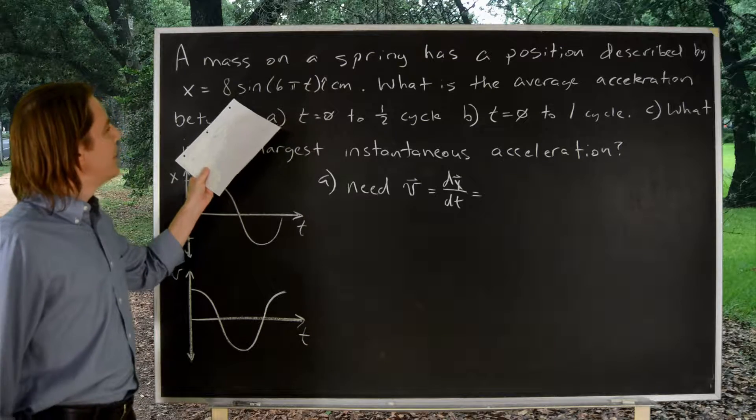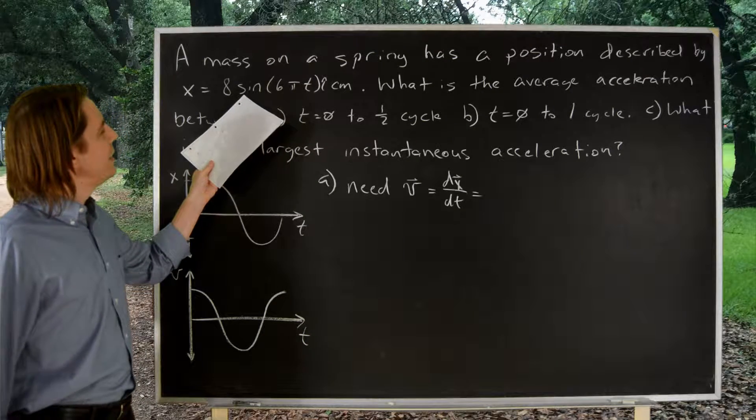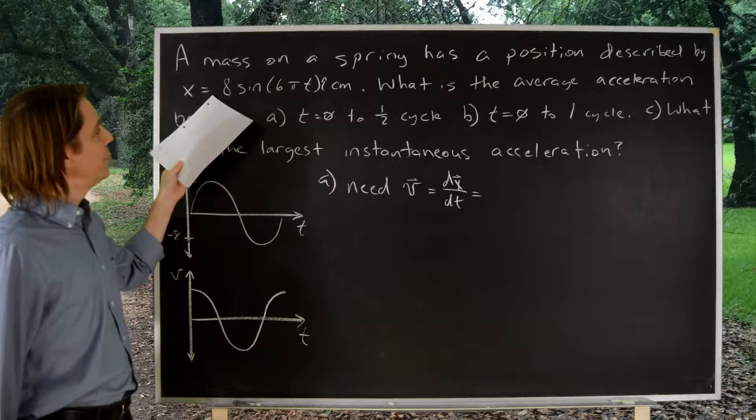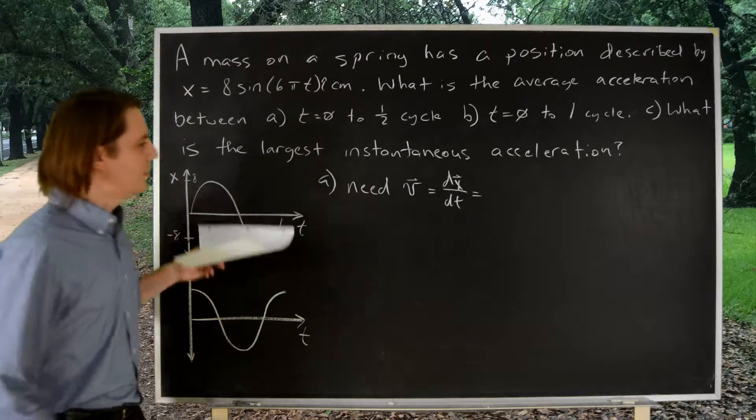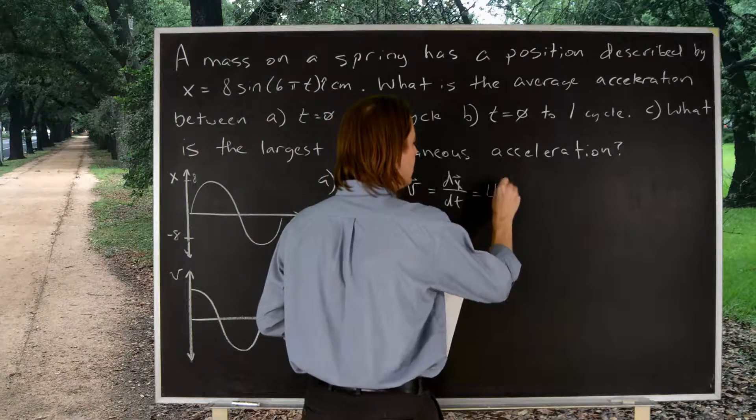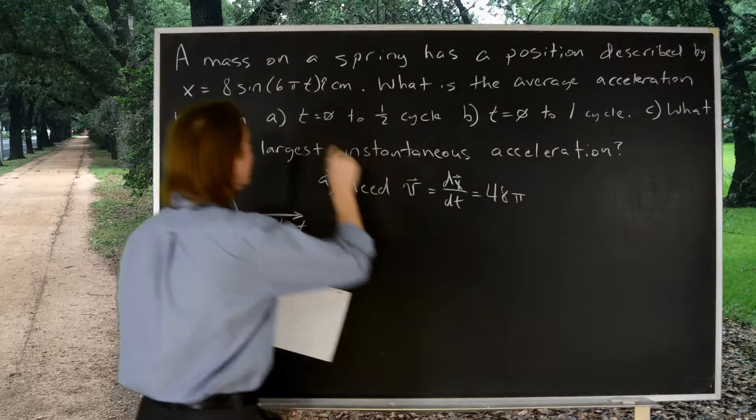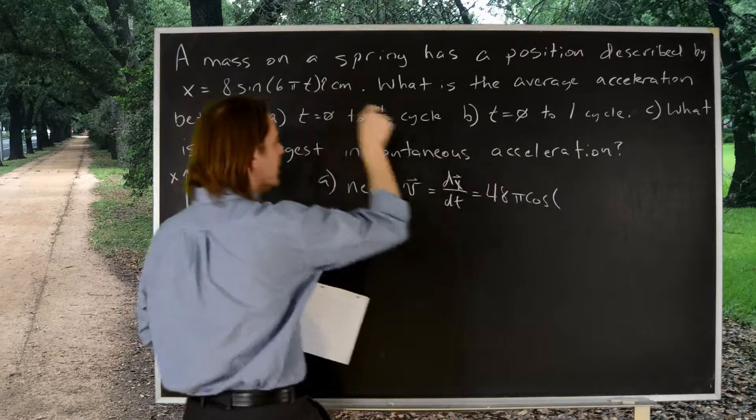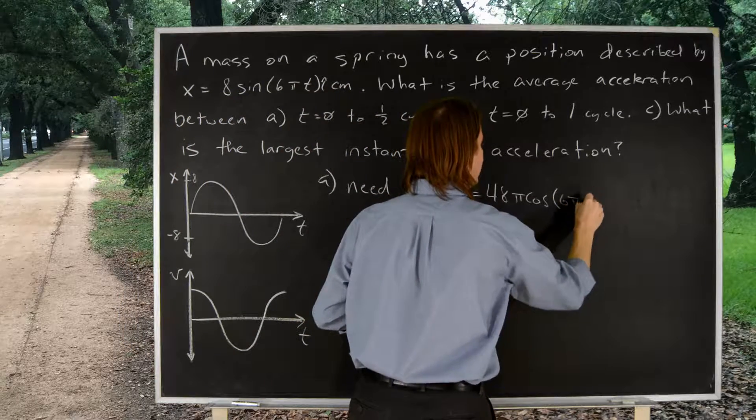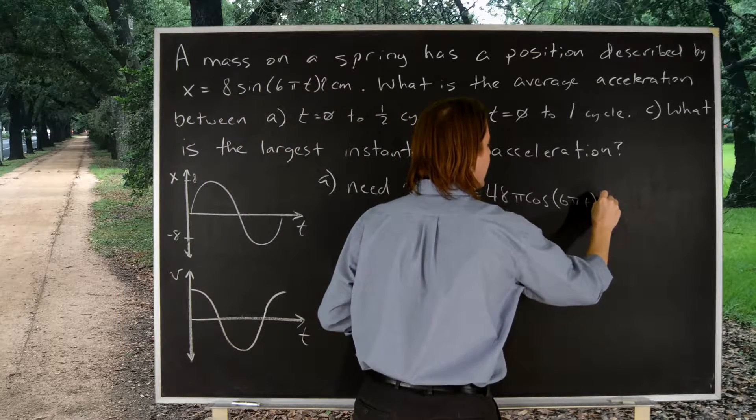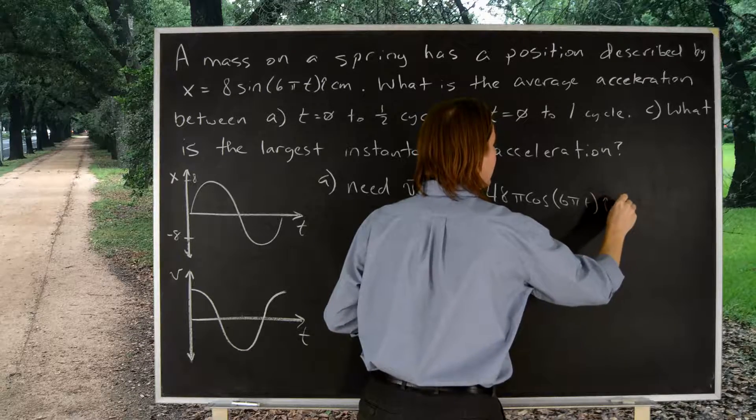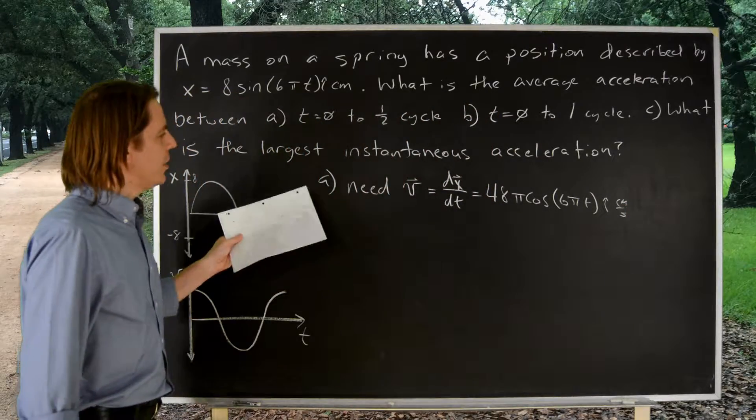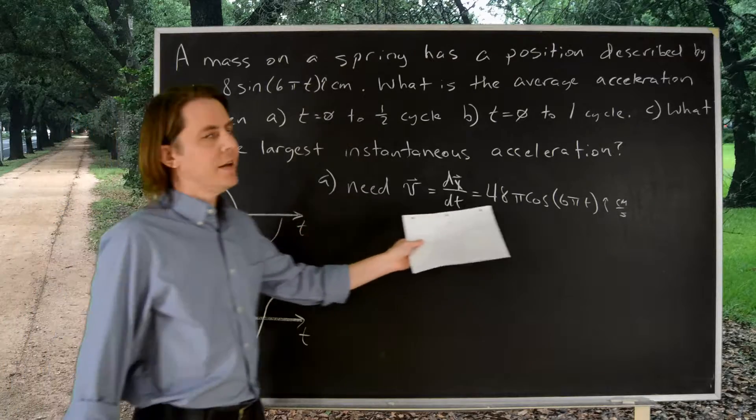So, we're going to take the derivative. To take a derivative of a sine, you take what's inside times time, and you just pull it out and multiply it by the prefactor. So, that comes out to 48 pi. And the sine becomes cosine, and the inside stays the same, 6 pi t. That is i-hat centimeters per second. So, there is the velocity at any time.